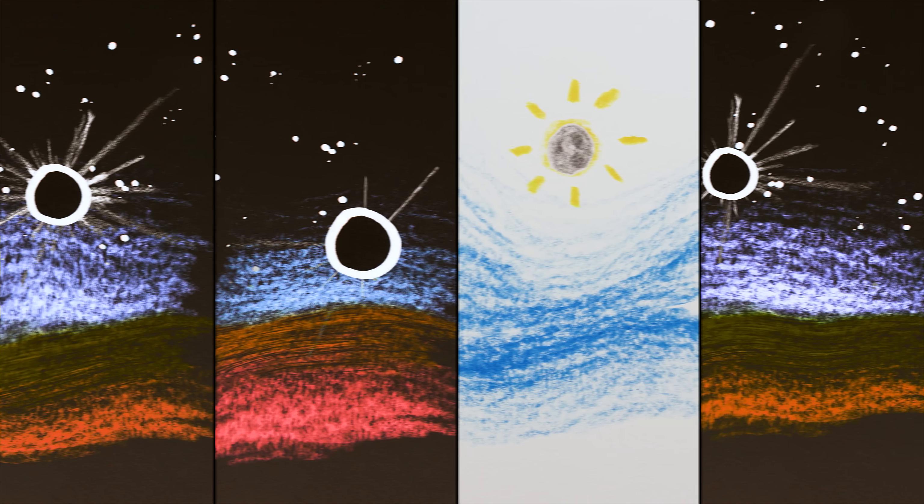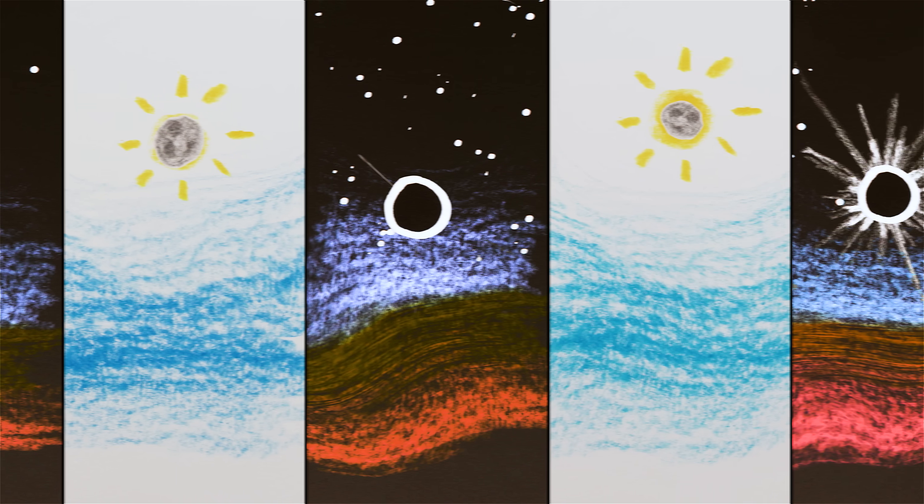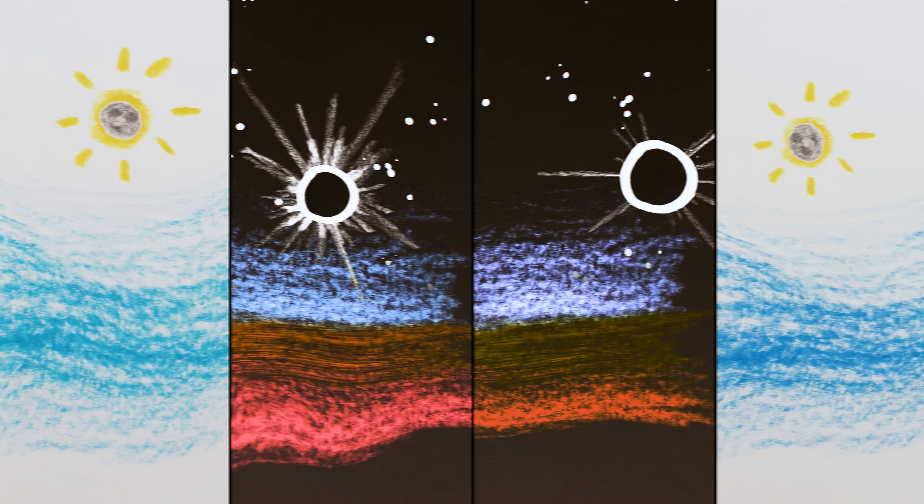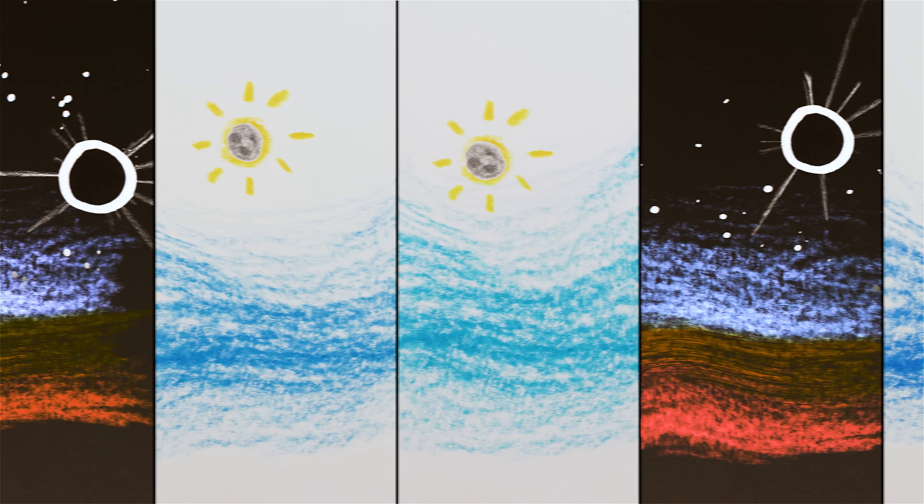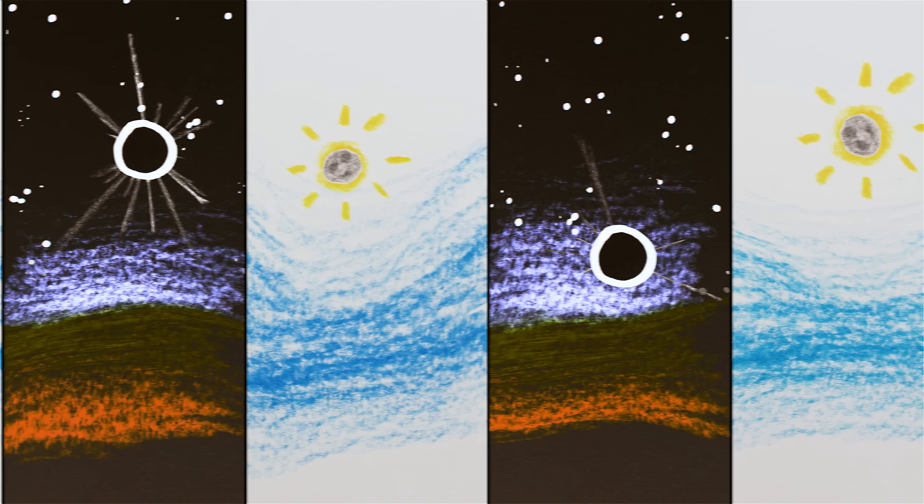But as the moon continued to get farther and farther from Earth, annular eclipses became more and more common. Some time in the last several hundred million years, we crossed a threshold to where the moon appears smaller than the sun on average. At that point, annular eclipses became more common than total eclipses.